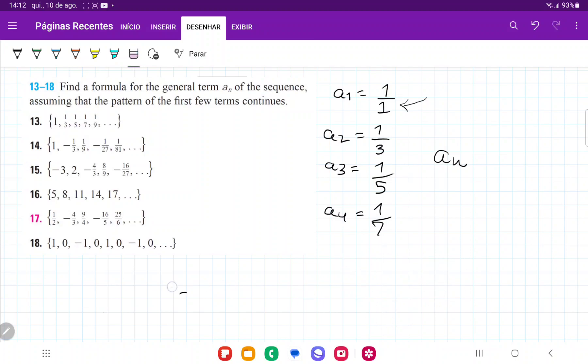And so the numerator is always going to be 1, no matter what. And then the denominator follows this odd pattern. So it goes 2n minus 1.